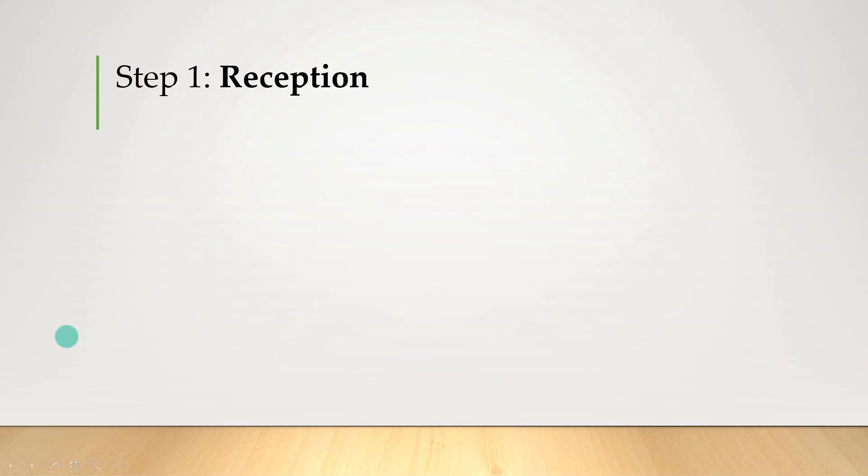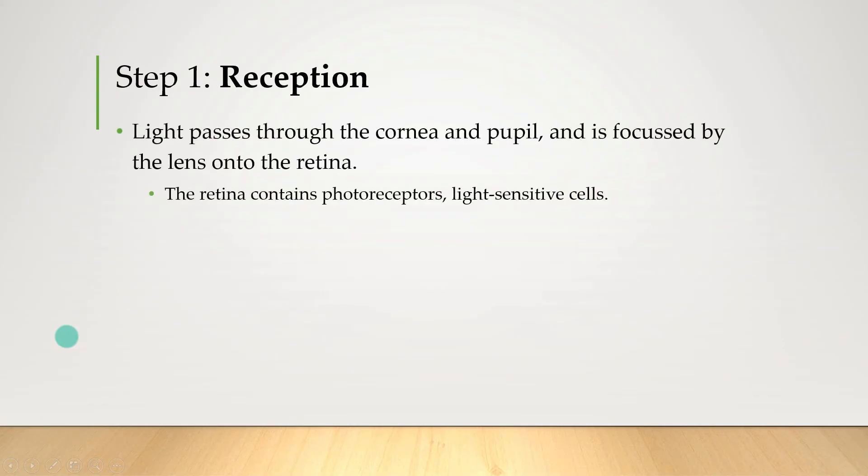So in a bit more detail: step number one, reception. That's when light passes through the cornea and pupil and it's focused by the lens onto the retina.